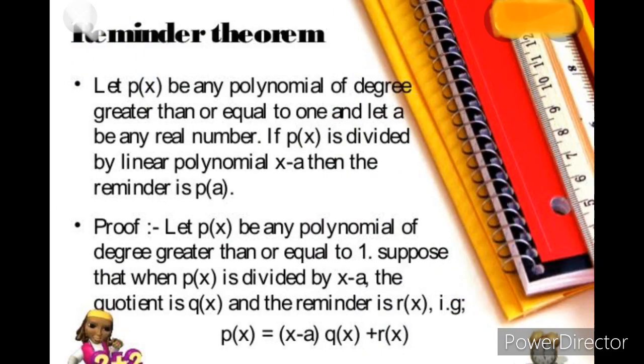That is your remainder theorem. Let p(x) be any polynomial of degree greater than or equal to 1 and let a be any real number. If p(x) is divided by linear polynomial x minus a, then the remainder is p(a). You can see the proof is given. What I want to say students, remainder theorem is useful for your exercise problems. But you should know what is remainder theorem. This is very helpful for you, for your MCQs.